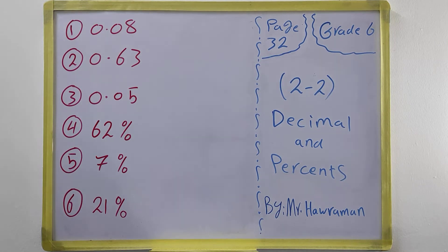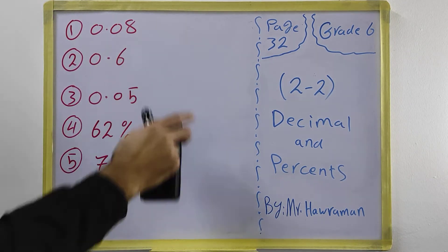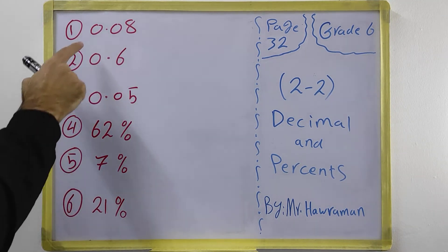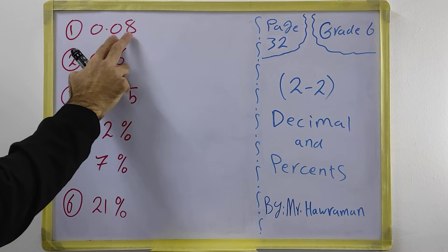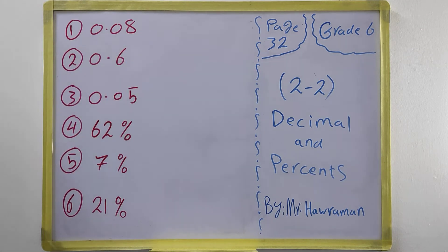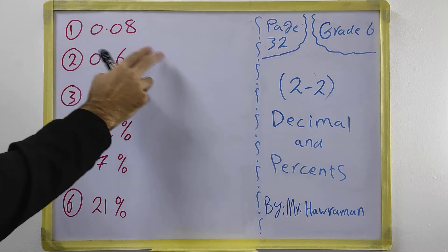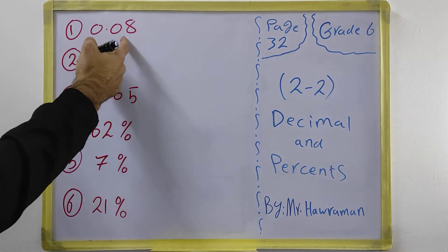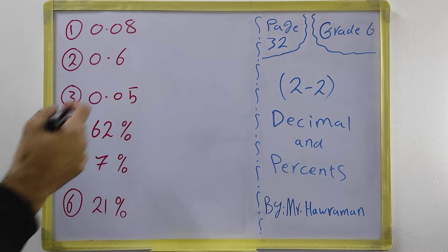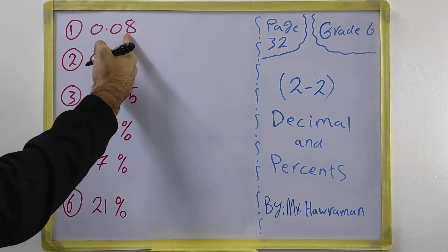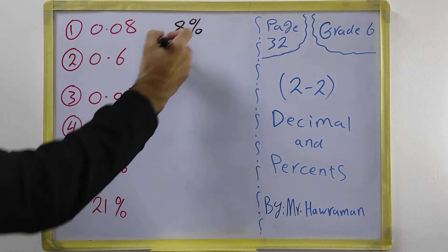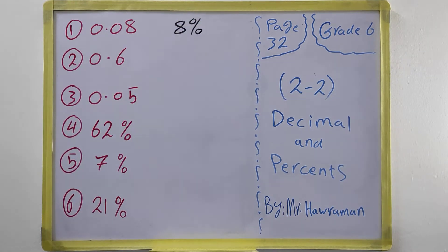When we change something from decimal to percent, after the decimal point we must always have two digits. For example, 0.08 — how much percent is this number? The digits after the point are 08, which means 8, so it is 8 percent.